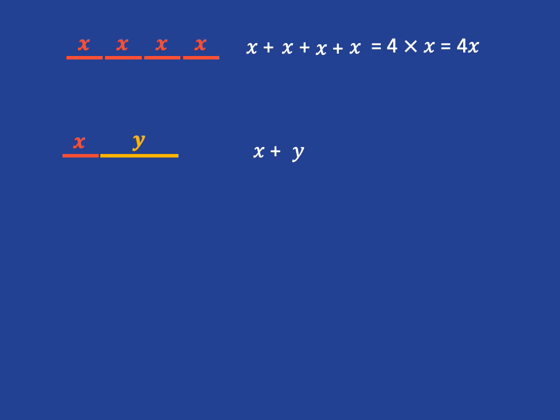X and Y are two different lengths, they're not like terms, so we cannot add them together and simplify.